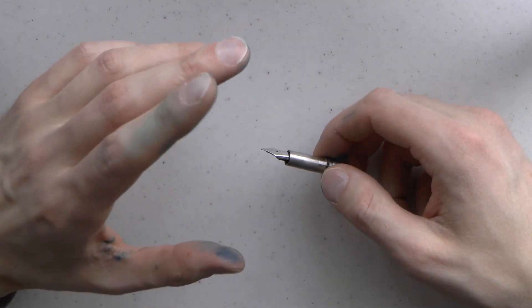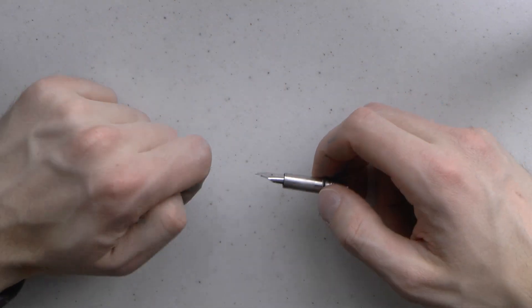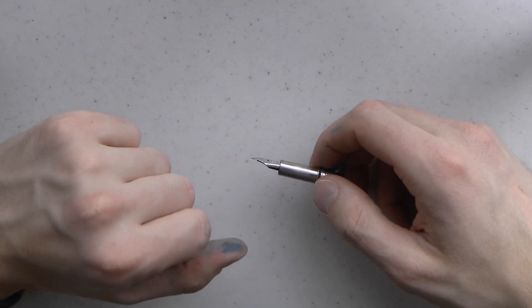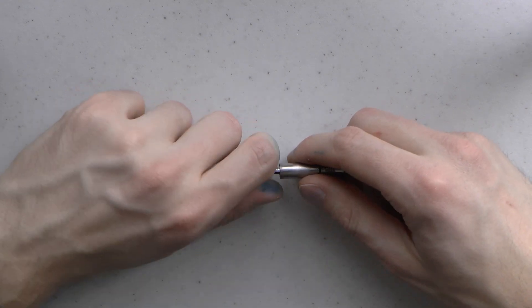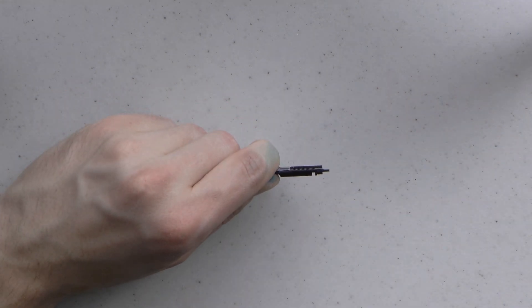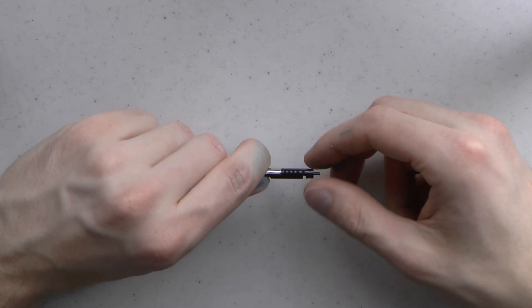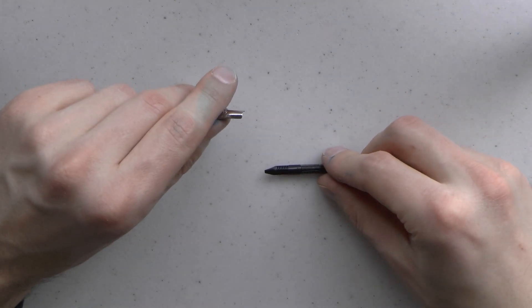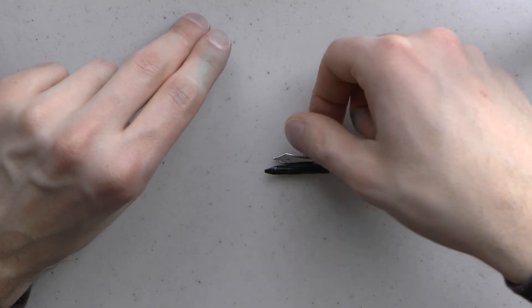I know in this particular pen, the nib and feed pull out. So I'm going to hold this tightly. I'm going to pull straight, not twist and turn anything. I don't want anything out of alignment. And now I have two pieces. I have a feed and I have a nib.